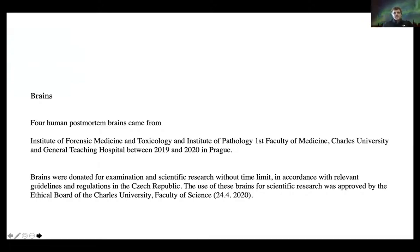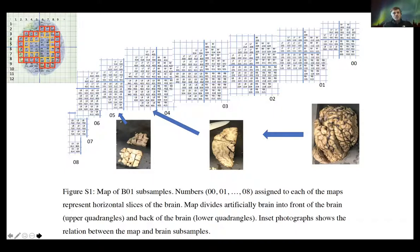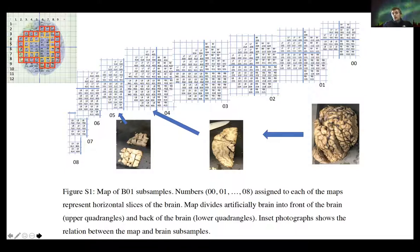The brains were obtained from the Institute of Forensic Medicine in accordance with regulations and guidelines in the Czech Republic. Samples were cut using a ceramic knife to avoid contamination. Even so, when comparing with published data, the noise level of our data was quite high, though we are still confident our data gives us reasonable conclusions.